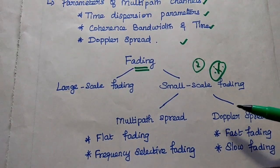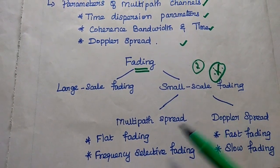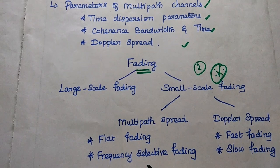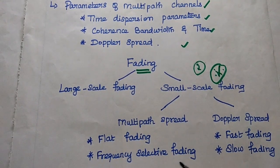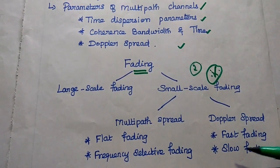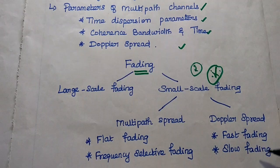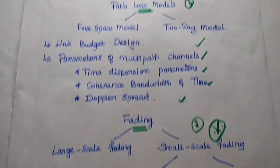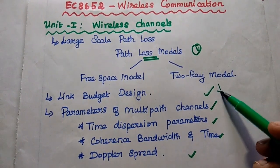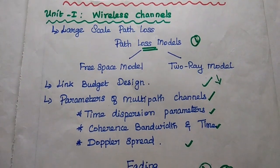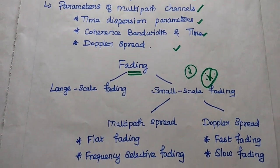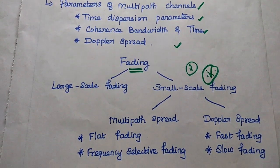You also need to concentrate on small scale fading. Due to multipath delay spread, there are two types of fading: flat fading and frequency selective fading. Due to Doppler spread, there are fast fading and slow fading. The comparison between these is also very important. We can expect problems in this first unit, including two ray model problems to find path loss, and small scale fading problems to find time dispersion parameters.